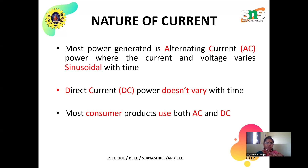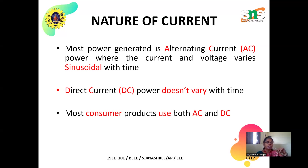The second type of current is direct current — DC current. DC power is constant, it is fixed. DC current does not vary with time — it is a constant supply. If you take 220 volts DC, it is constant throughout the supply period. The voltage does not change.